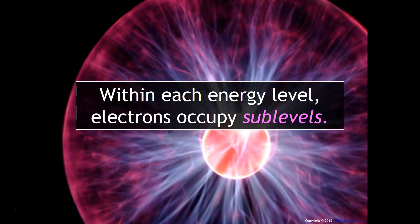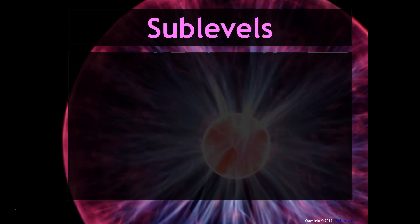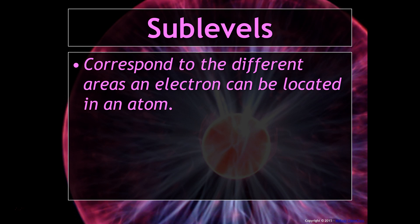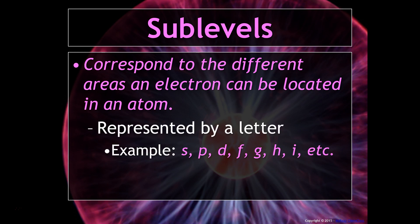Within each energy level, your electrons occupy something called sublevels. Sublevels correspond to different areas that an electron can be located in an atom. They are represented by a letter: s, p, d, f, g, and so on. All of these letters actually stand for something. If you are interested, I really encourage you to research it, because it is pretty interesting.